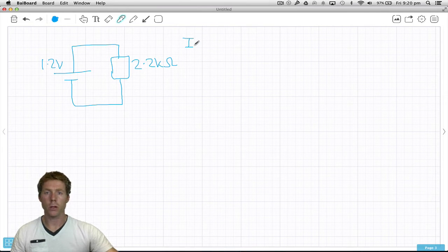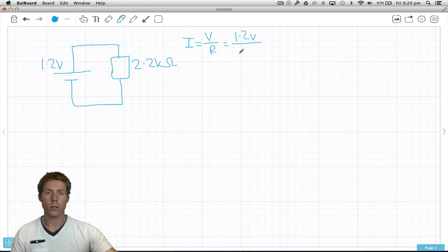Let's get our formula. Current equals voltage divided by resistance. The voltage is 1.2 volts, the resistance is 2.2k ohms.